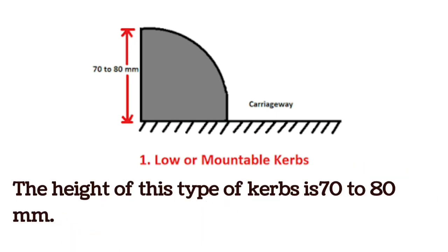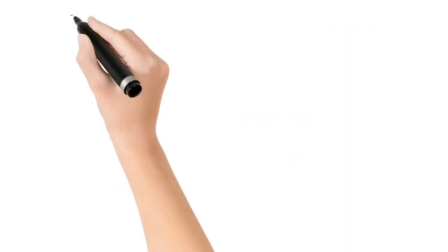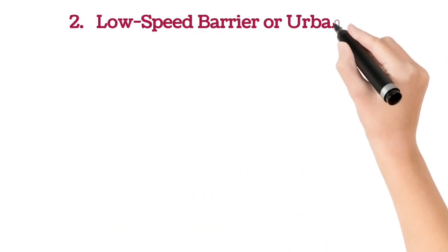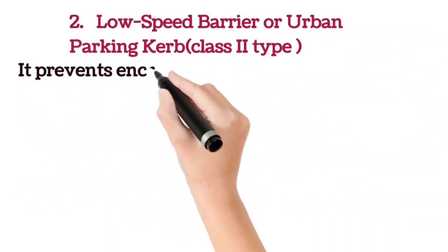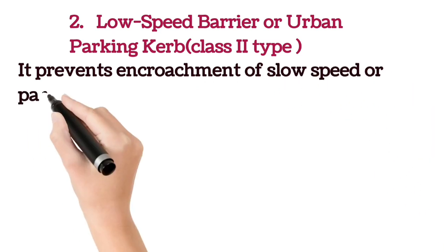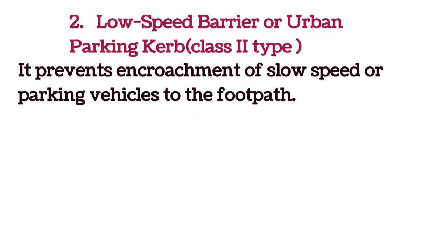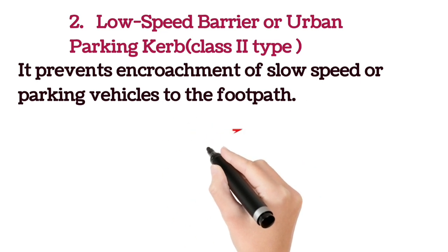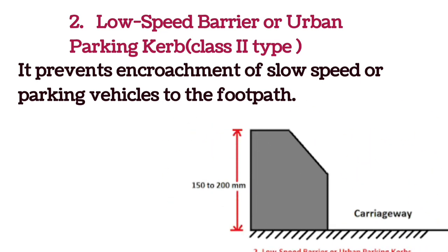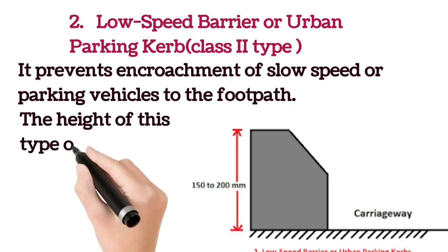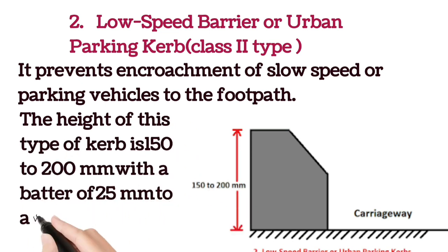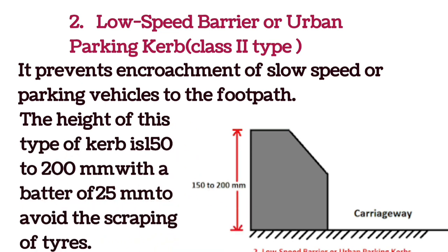The second type is Class 2, or low speed barrier curb, also called urban parking curb. It prevents encroachment of slow speed or parking vehicles onto the footpath. The height of this type of curb is 150 to 200 mm with a batter of 25 mm to avoid scraping of tires.